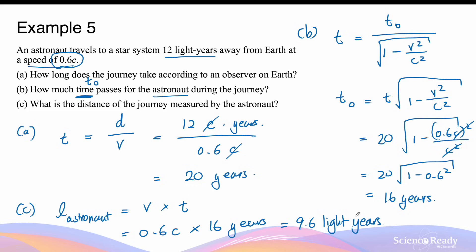The unit is light years because we multiplied the speed in terms of c by years. This distance of 9.6 light years is shorter than the 12 light years measured by the stationary observer. So the distance traveled is contracted from the point of view of the person on board, because they are moving relative to the starting and end points of the measured distance.